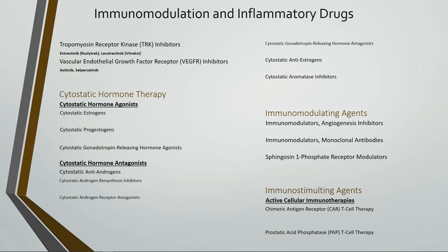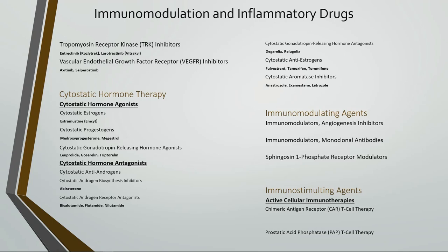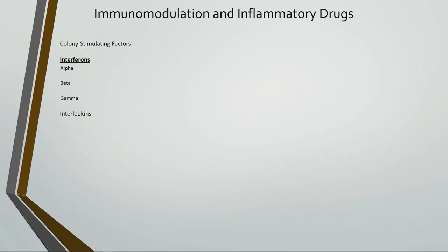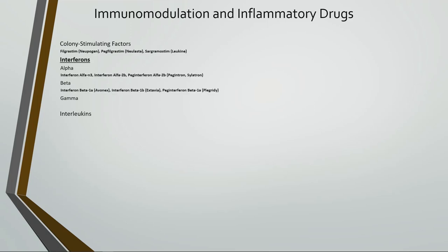Under cytostatic hormone therapy, we have cytostatic hormone agonists including cytostatic estrogens, cytostatic progestogens, and cytostatic GnRH agonists. For cytostatic hormone antagonists, we have cytostatic anti-androgens including cytostatic androgen biosynthesis inhibitors, cytostatic androgen receptor antagonists, and cytostatic GnRH antagonists, as well as cytostatic anti-estrogens and cytostatic aromatase inhibitors. For immunomodulating agents, we have angiogenesis inhibitors, monoclonal antibodies, and sphingosine-1-phosphate receptor modulators. For immunostimulating agents, we have active cellular immunotherapies including chimeric antigen receptor T-cell therapy, colony stimulating factors, interferons alpha, beta, and gamma, and interleukins.